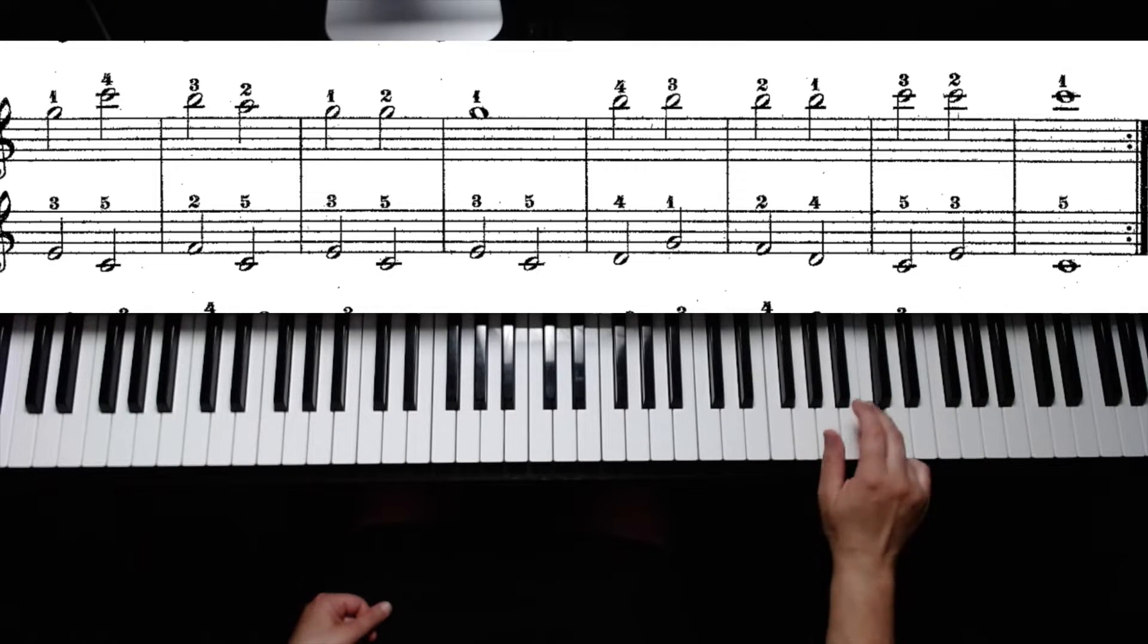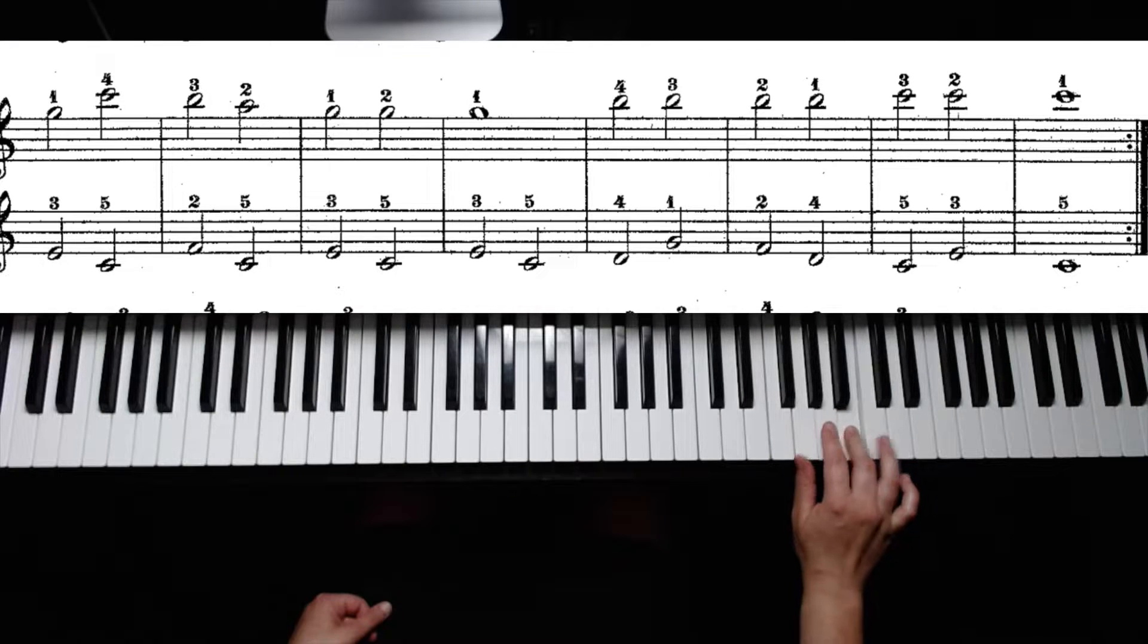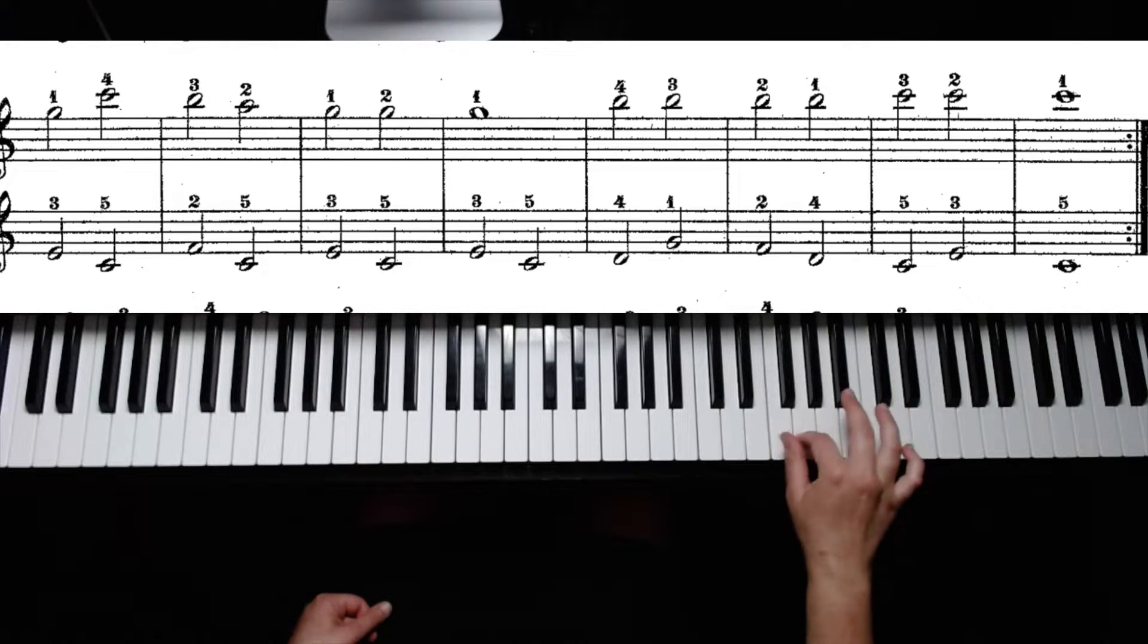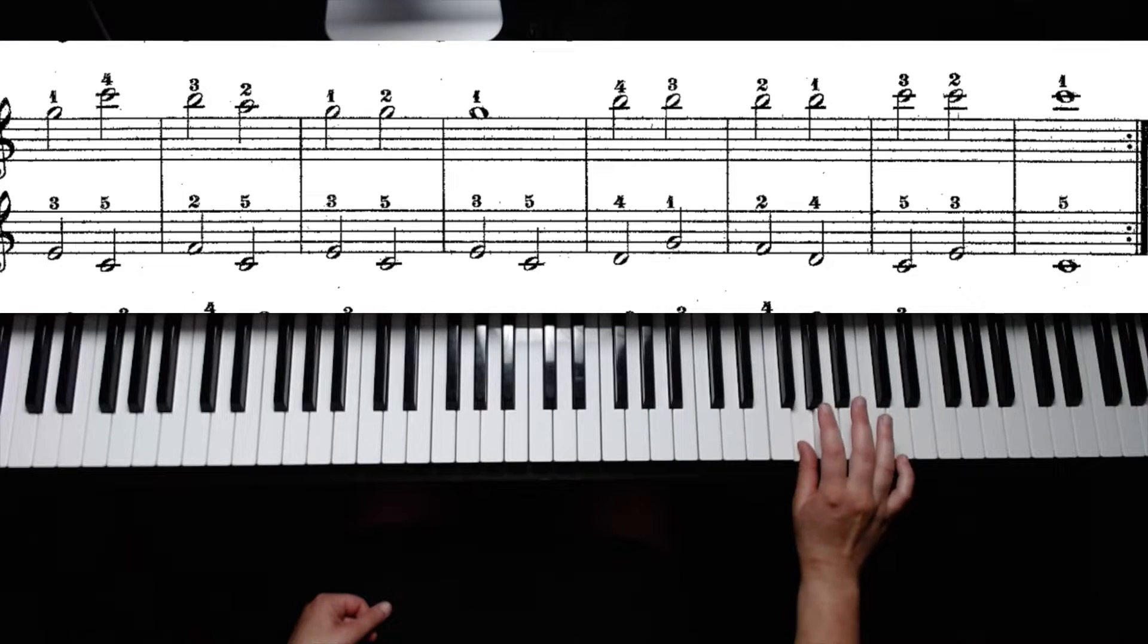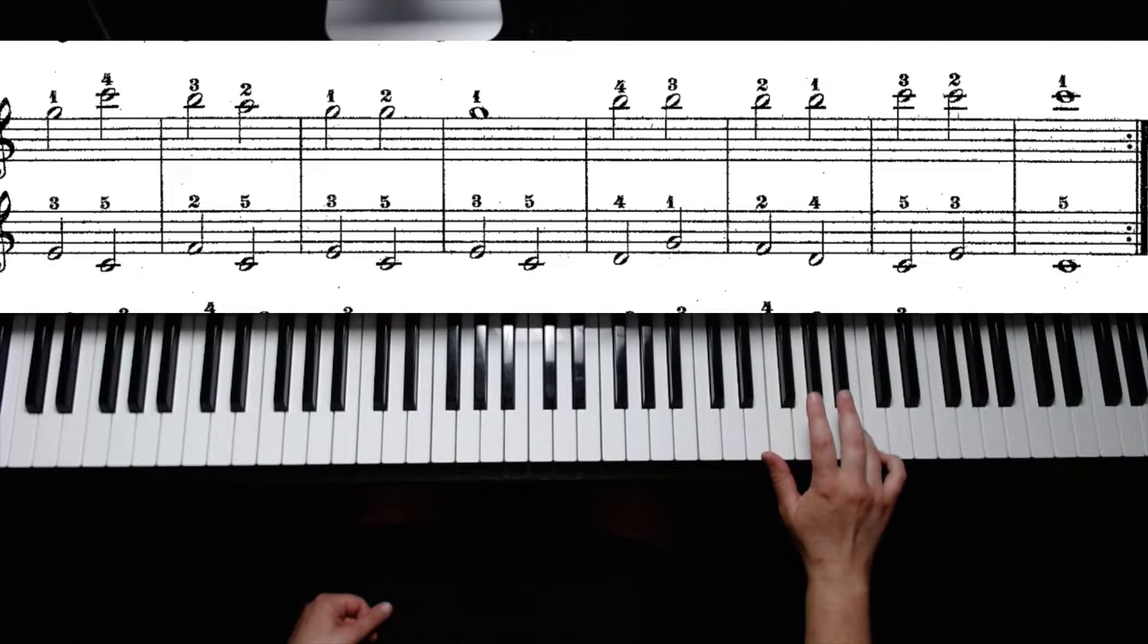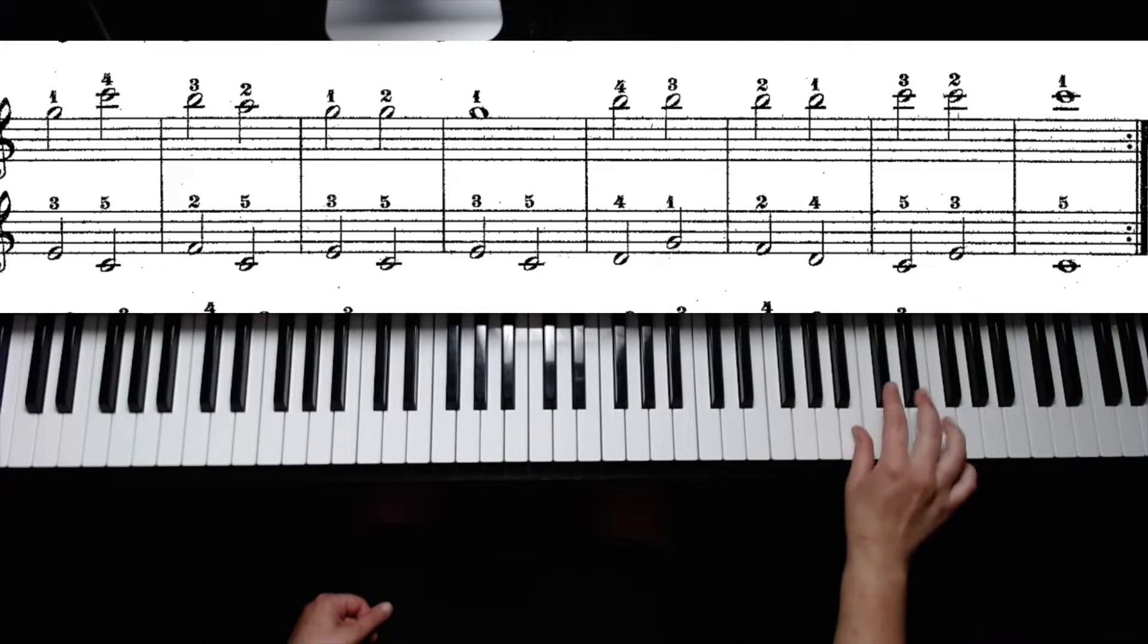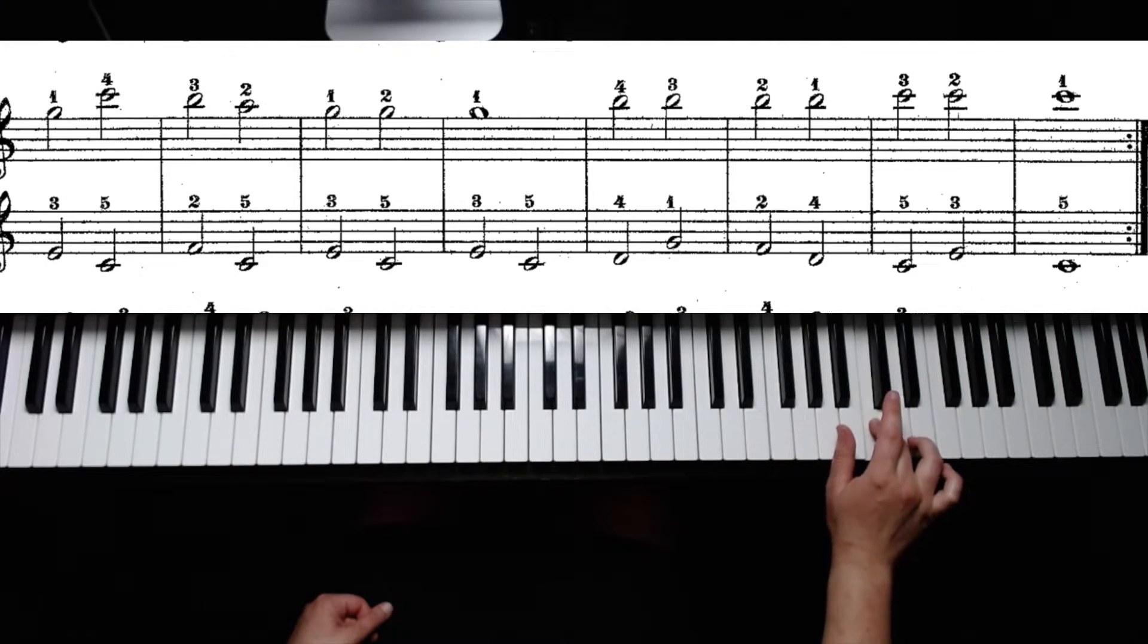Here is the second line. G, C, B, A, G, G, G. We have four B's on four, three, two, one. And three C's on three, two, one.